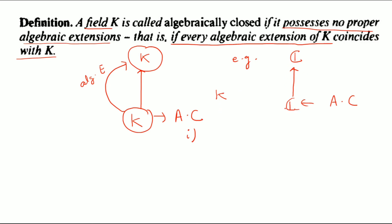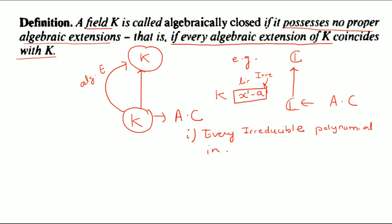In C, all polynomials are reducible except linear polynomials, because a linear polynomial is irreducible. So every irreducible polynomial in k[x] is of degree one. Every irreducible polynomial inside it will be linear, and their degree will be one.